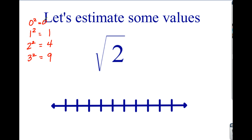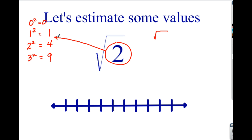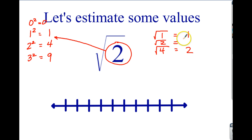Now we're going to use a number line to estimate where the square root of 2 goes. We're going to look for the perfect square below and the perfect square above it. The number 2 falls in between 1 and 4. We know the square root of 1 equals 1, and the square root of 4 equals 2. So the square root of 2 falls somewhere between 1 and 2.